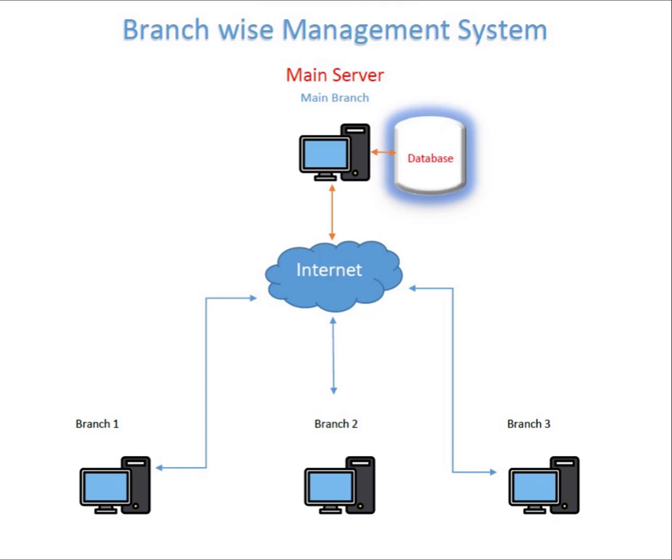If any local branch loses the internet connection, they cannot do any transactions unless the connection is restored. All transactions from branches will be stored in the database separately so we can access independent reports for each branch. The server can see all transactions of all branches separately or on an integrated basis. Let's start the video and see how Tech ERP handles all these things using the branch-wise management system.